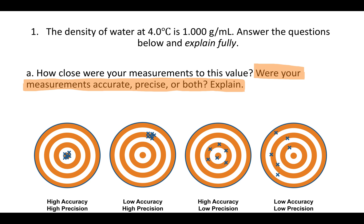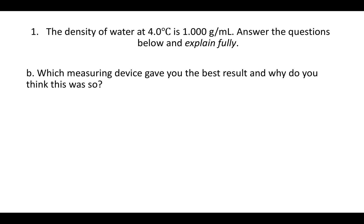The second question, part B, is which measuring device gave you the best result and why do you think this was so? So the best result is a density closest to 1.000 grams per milliliter.